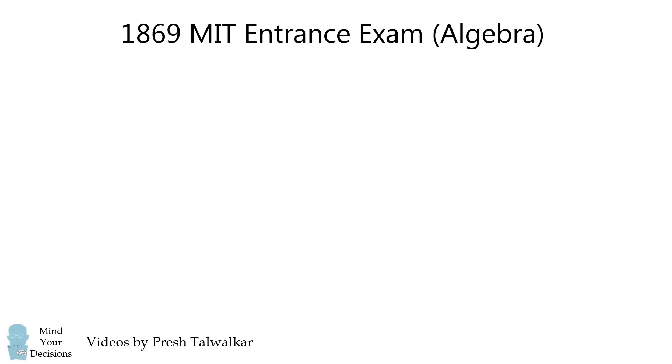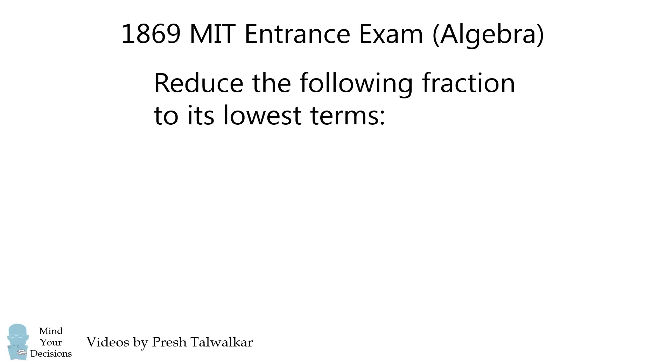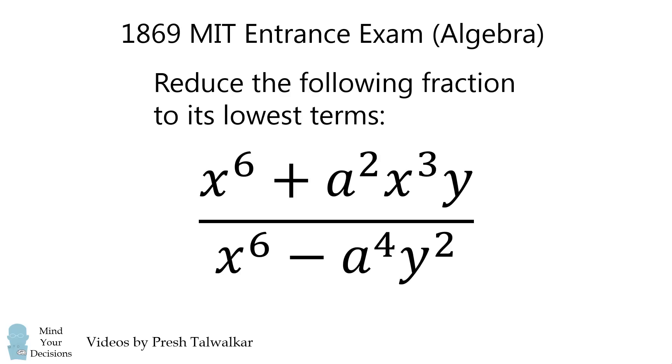Today, MIT ranks as one of the top universities in the world. 150 years ago, this problem appeared on its entrance exam. Reduce the following fraction to its lowest terms. The numerator is x to the power of 6 plus a squared x cubed y, and the denominator is x to the power of 6 minus a to the fourth y squared.